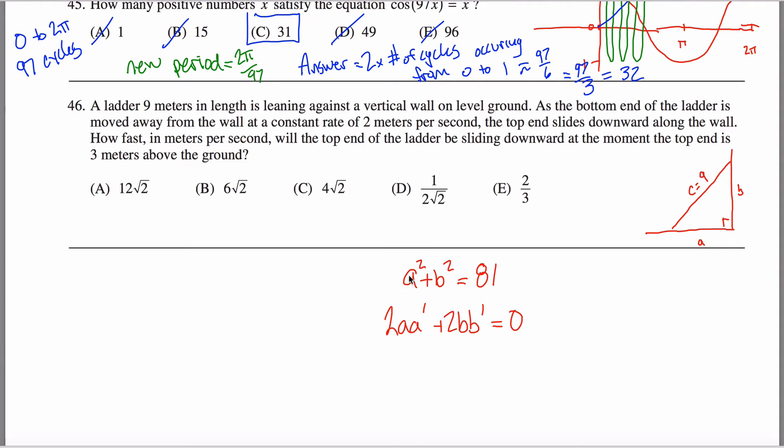So this is chain rule. The outside function is the stuff being squared. So I have stuff squared. Take care of the squared part. Bring the two down in front. It's two A to the first power, but then you're not done. You still have to multiply by the derivative of A, which I'm going to write as A prime instead of like dA over dt or something. Same logic here. I get two BB prime and the derivative of 81 is just zero.